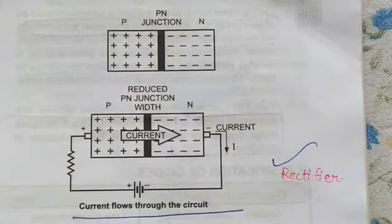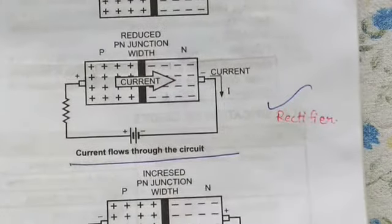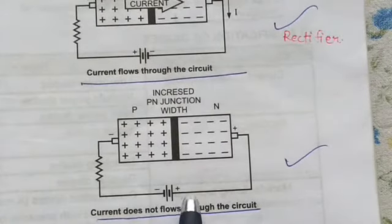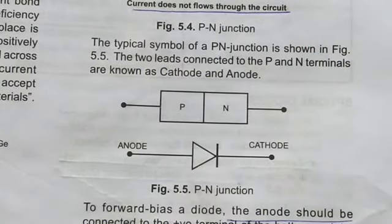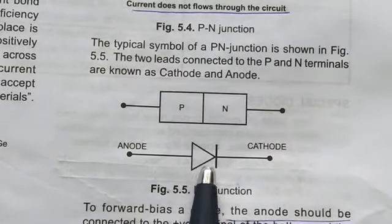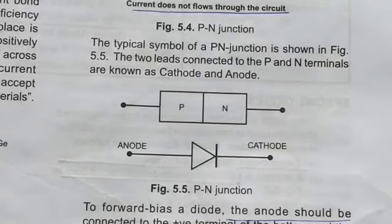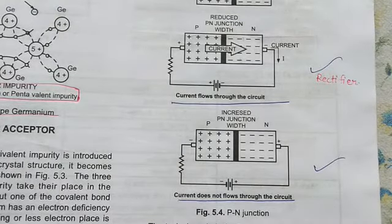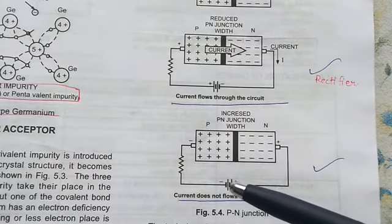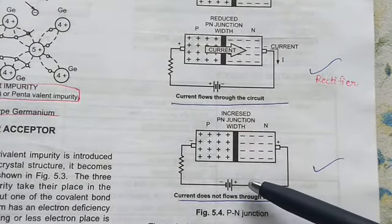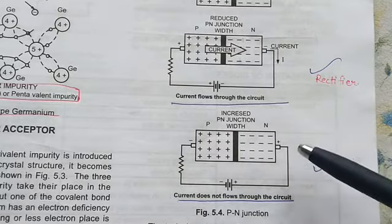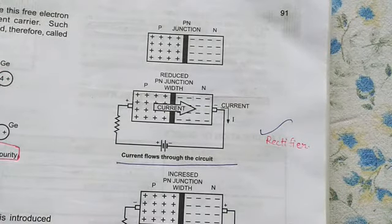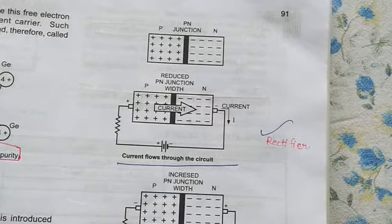When we put the terminal in the opposite direction — this is the reverse direction — there is no flow of current throughout the circuit. This is called forward bias, where current is flowing throughout the circuit, and this is called reverse bias, where there is no flow of current. This is called a rectifier, which converts AC current to DC current.